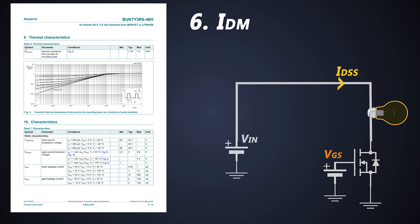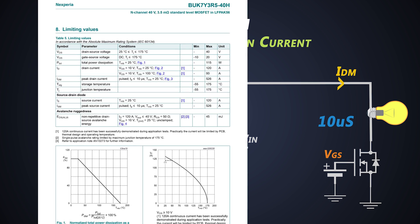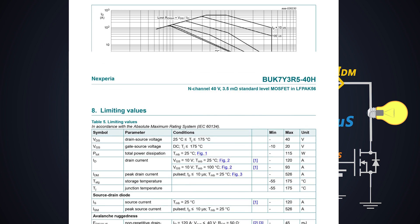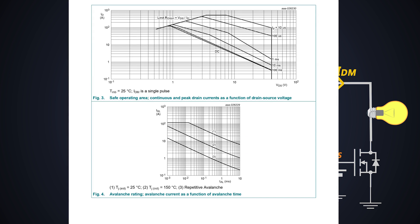Next is the peak drain current. It is the maximum drain current which can flow through the MOSFET for only 10 microseconds or less. For the MOSFET which we are referring to, it is 526A if the junction temperature is 25C only. This current capacity changes with the change in pulse time and VDS. If the pulse duration is more, this peak drain current decreases.